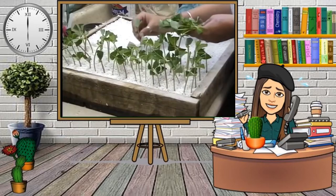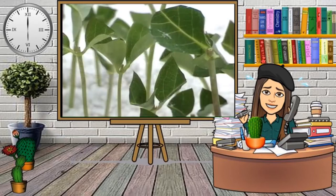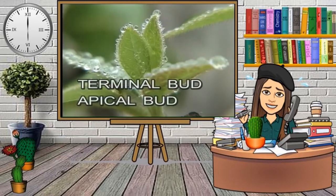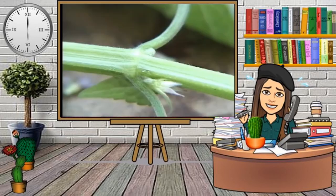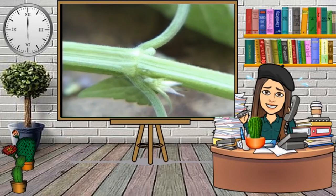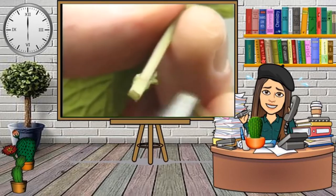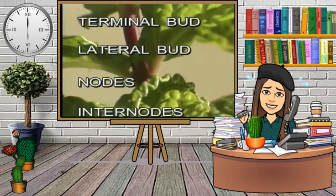Now let's take a look at the anatomy of a cutting. Most cuttings we will take will usually be stem cuttings. The basic stem cutting consists of a length of stem, leaves, a terminal bud also called the apical bud, lateral buds also called side buds, and nodes. Nodes are the joints of the stem where the leaves and side buds are attached. Leaves and buds are usually removed from the bottom nodes of the cutting. The segments of bare stem in between the nodes are called internodes.